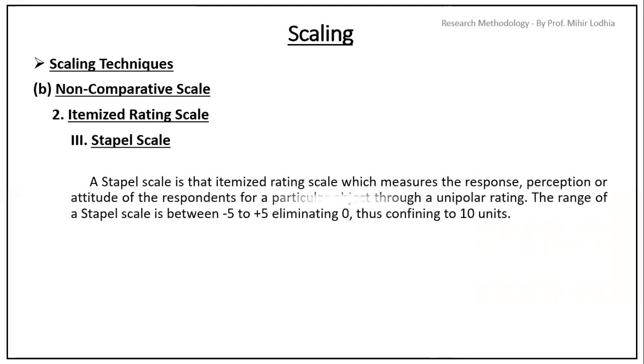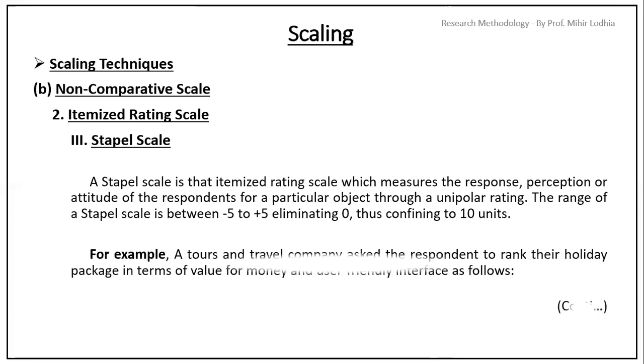Last one is stapel scale. A stapel scale is that itemized rating scale which measures the response, perception or attitude of the respondents for a particular object through a unipolar rating. The range of a stapel scale is between minus 5 to plus 5, eliminating 0. Thus, confining to total 10 units.